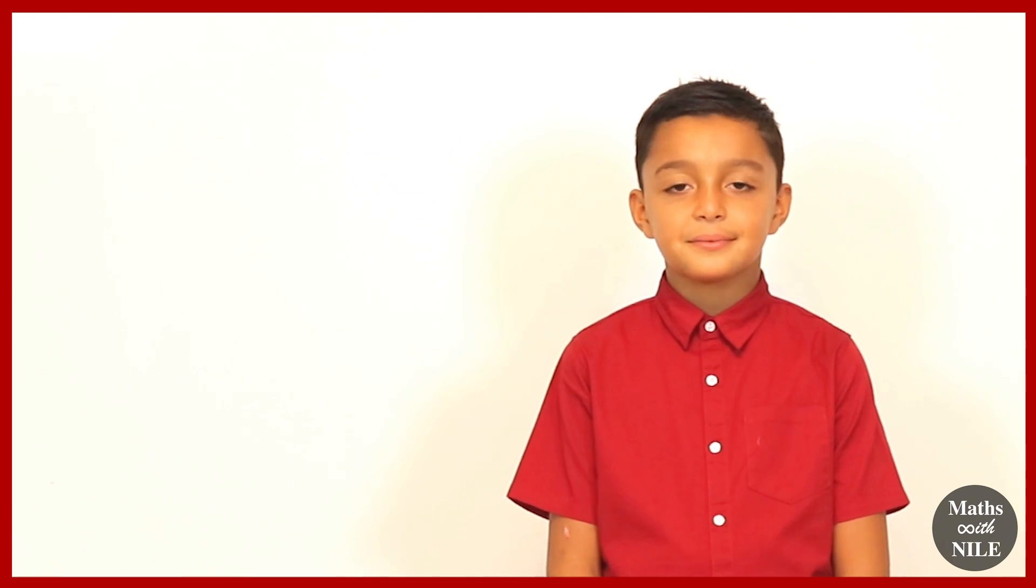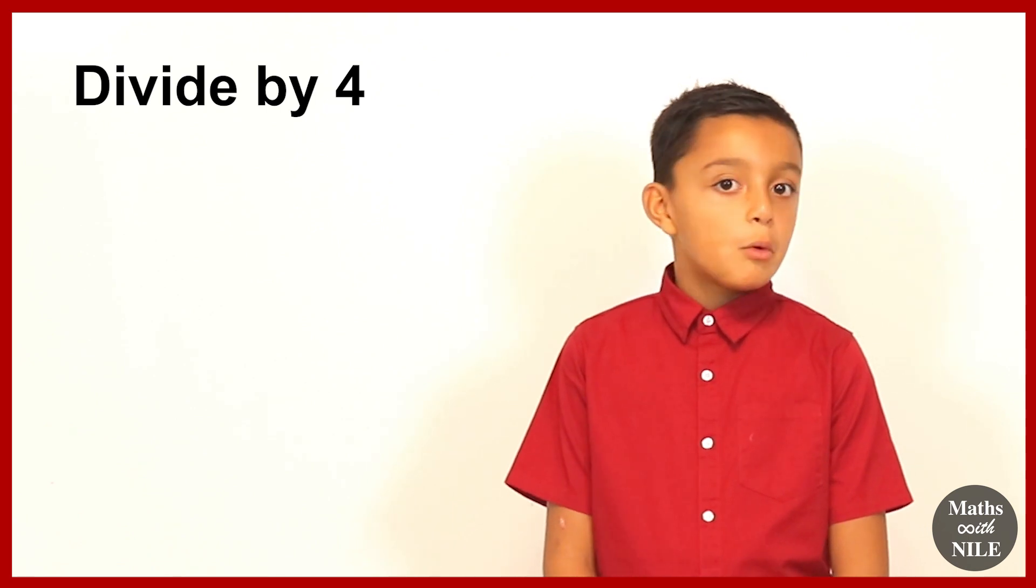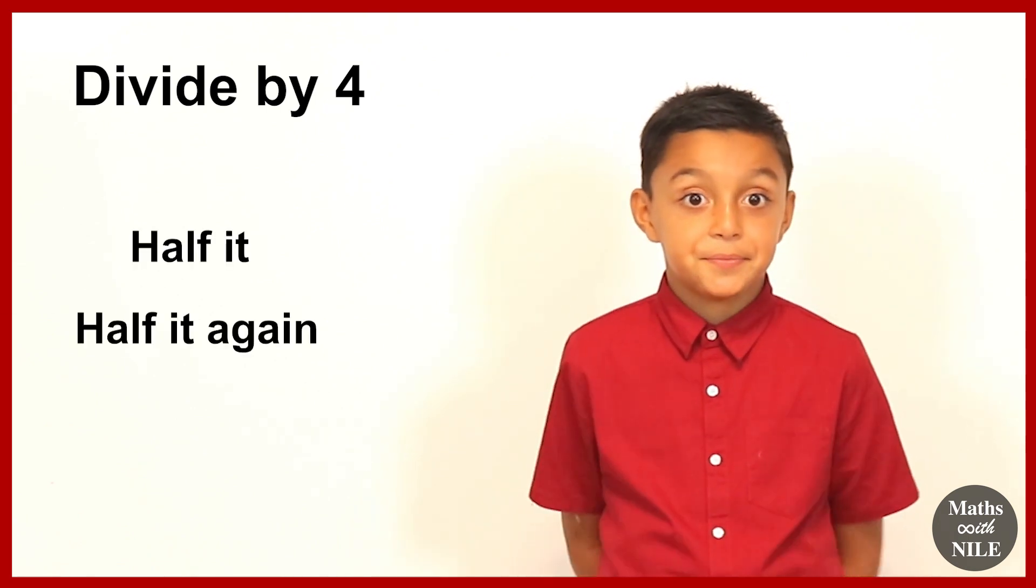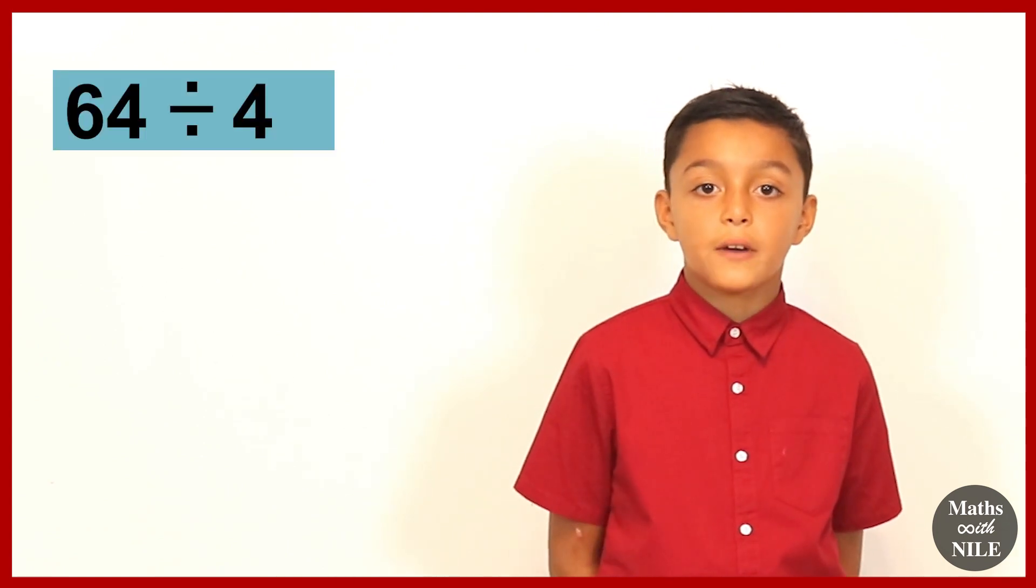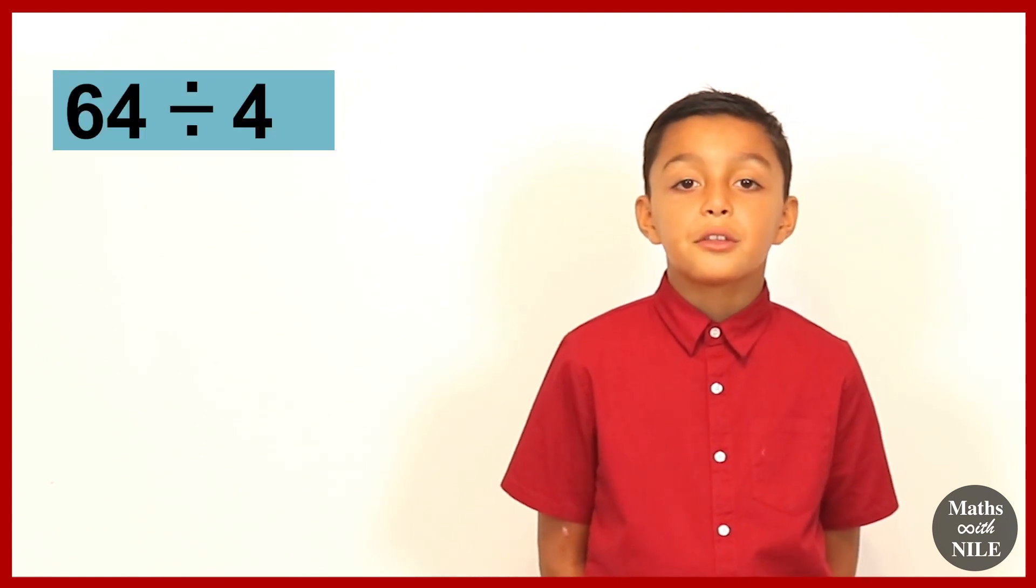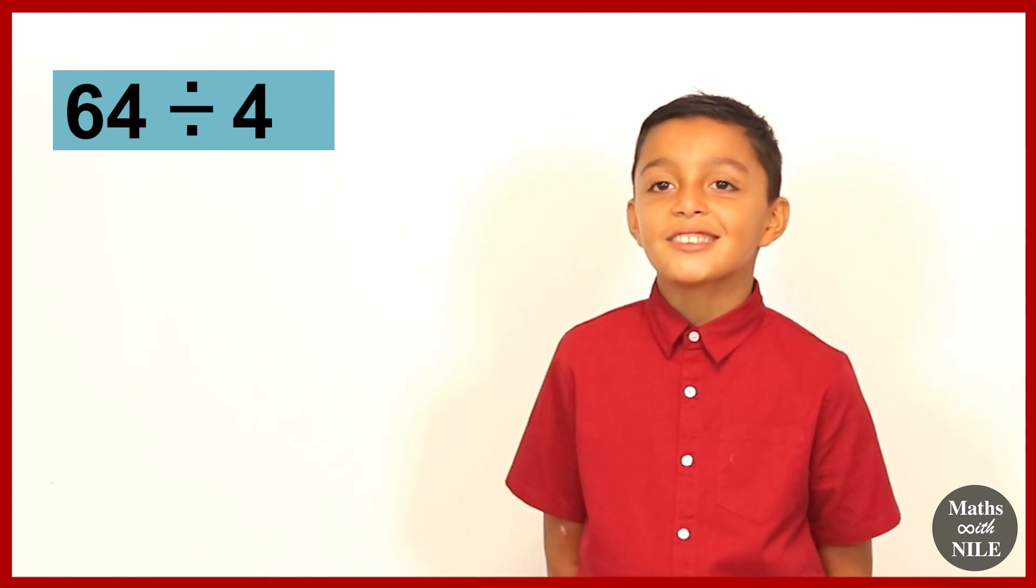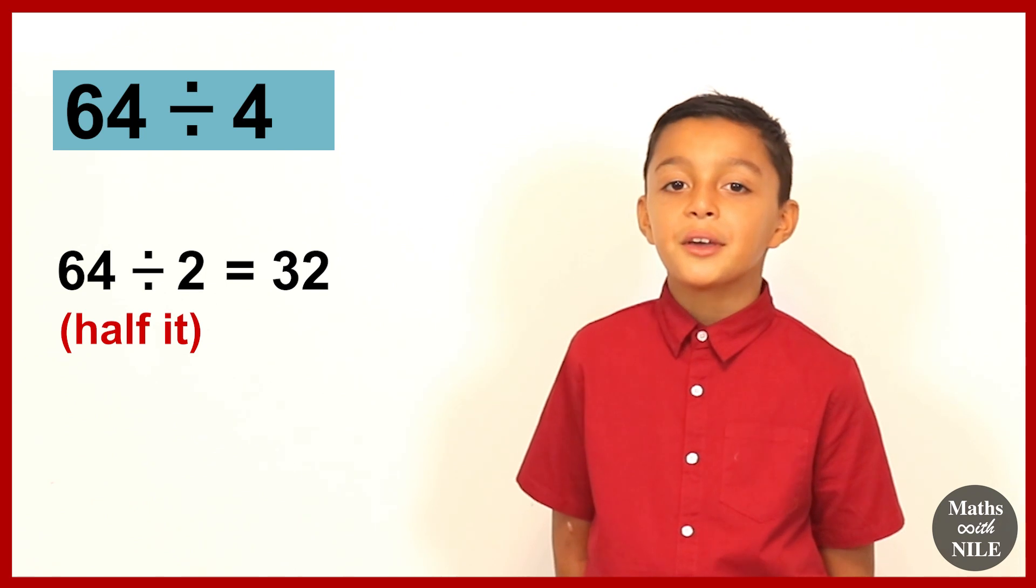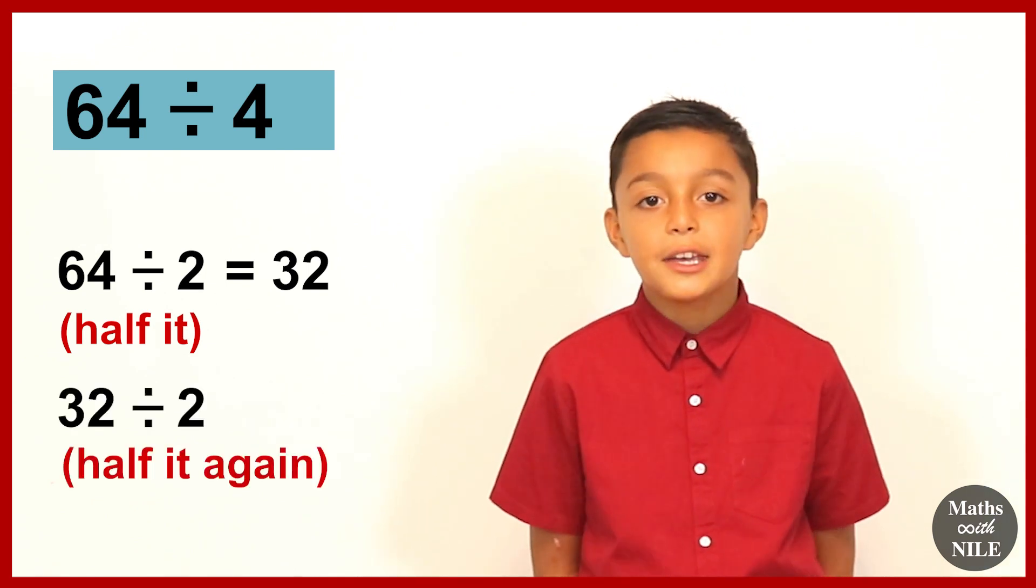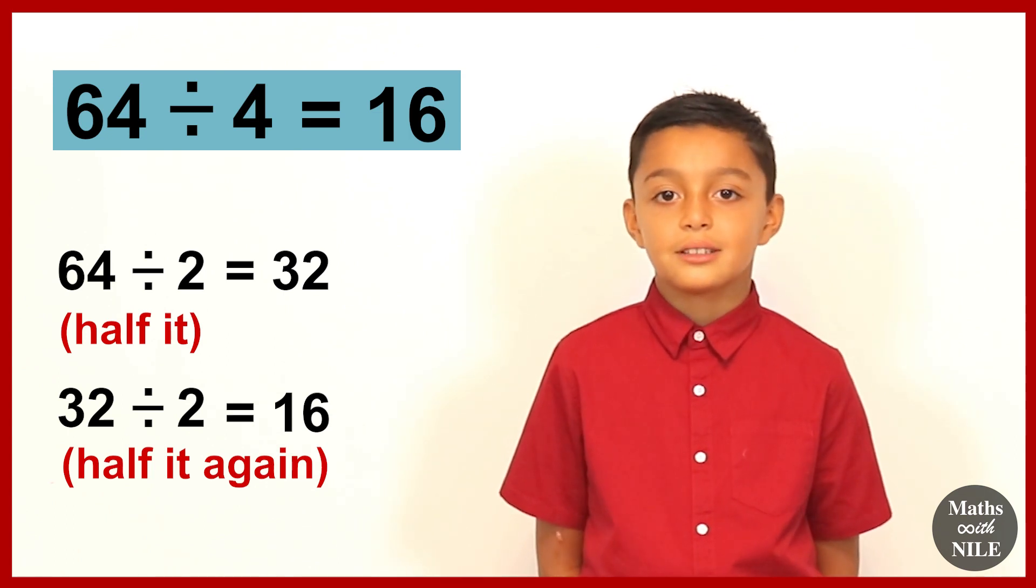So now we're going to do division by 4. So how can we quickly divide by 4, Niall? Half it and half it again. Exactly. Half the number and then half it again. So why don't you start with number 13? So in 13, 64 divided by 4. So we'll do 64 divided by 2, which is 32. And then 32 divided by 2 is 16. Excellent. So 64 divided by 4 is equal to? 16.